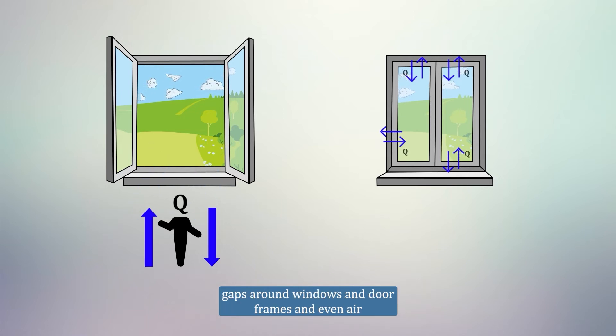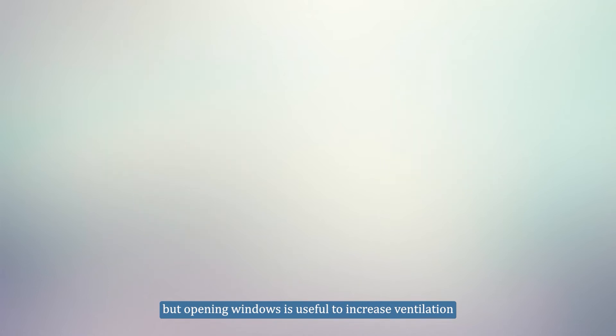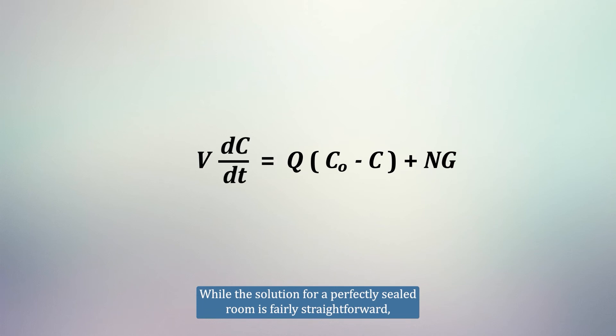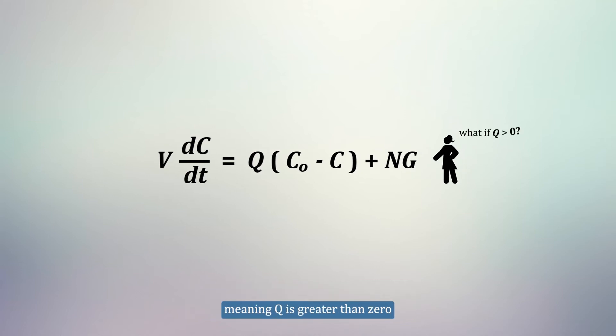Gaps around windows and door frames, and even air coming through brickwork, all ensure there is air for us to breathe inside, but opening windows is useful to increase ventilation. While the solution for a perfectly sealed room is fairly straightforward, we have a more complicated scenario when there is ventilation present, meaning Q is greater than zero.